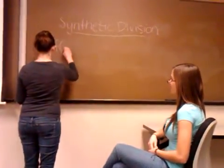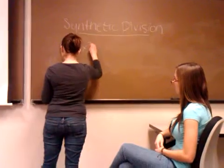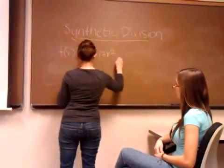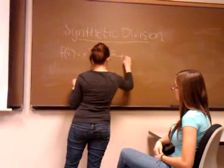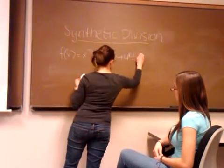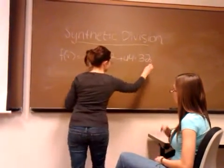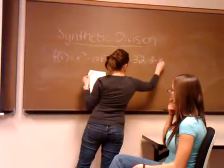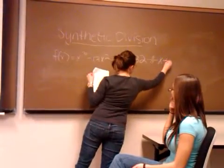We have f(x) equal to x to the third minus 13x squared plus 44x minus 32 divided by x minus 4. And I broke the chalk.